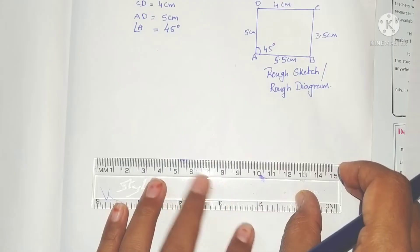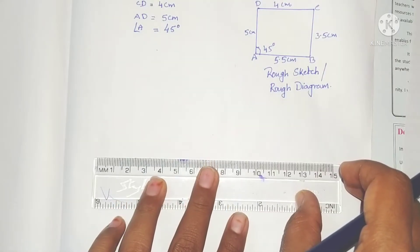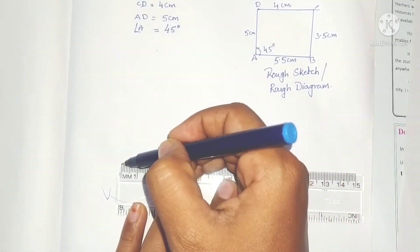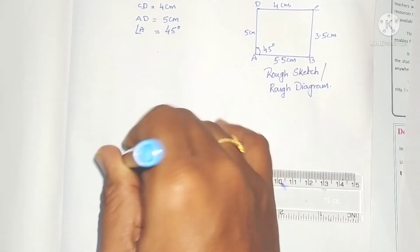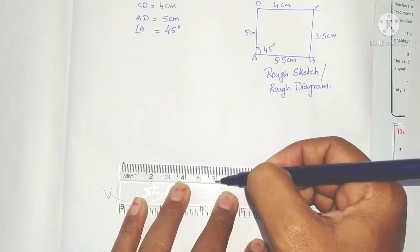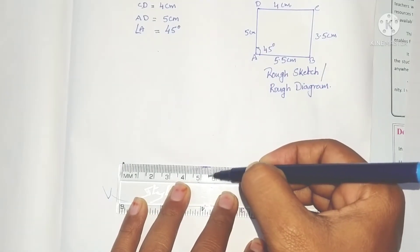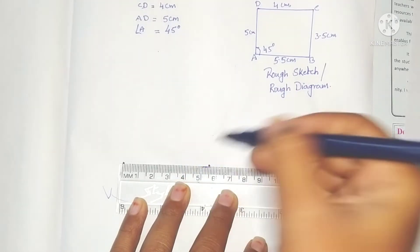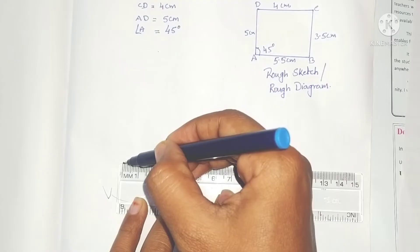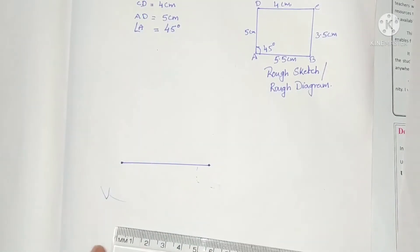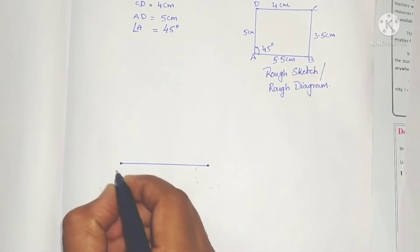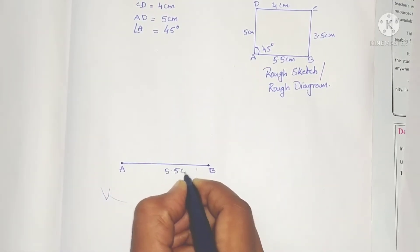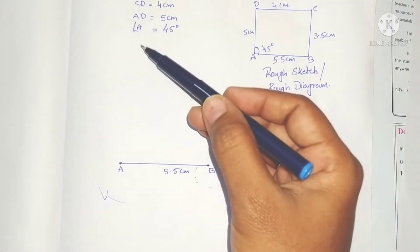Now take the scale and draw AB = 5.5 centimeters. Place the first point at 0 and the second point at 5.5 — that is, the 5th small line between 5 and 6. Join these two points to get line segment AB of 5.5 centimeters.